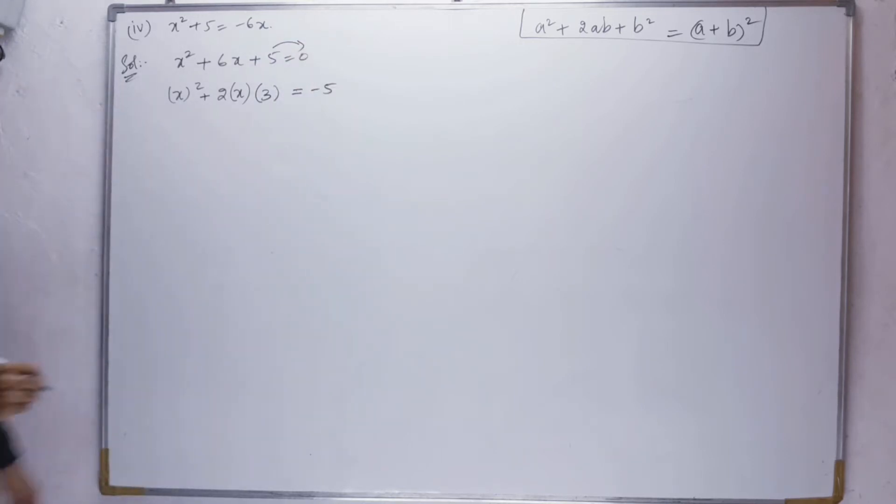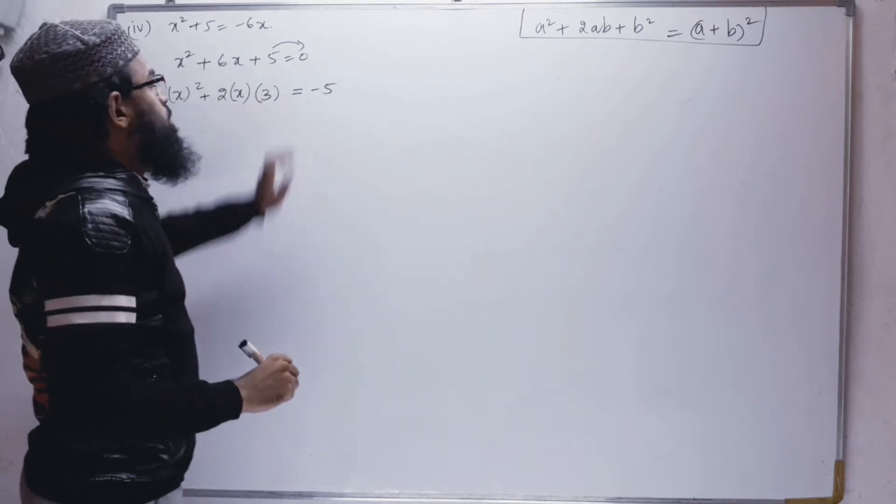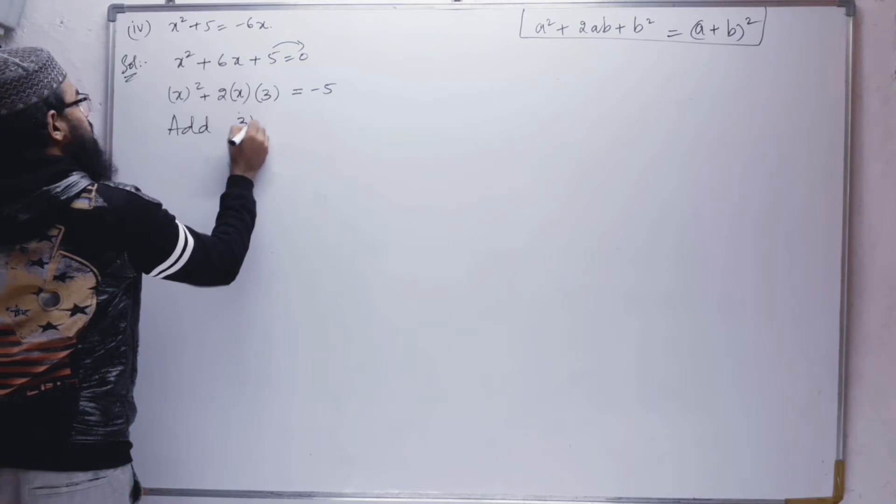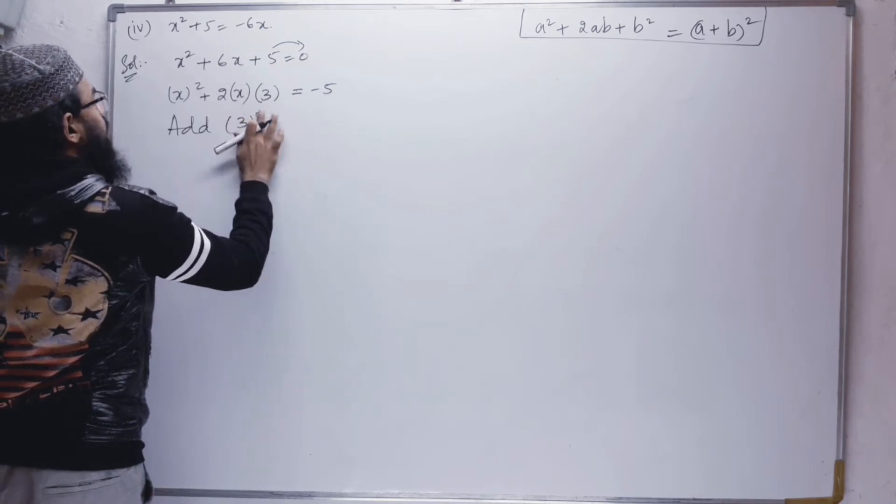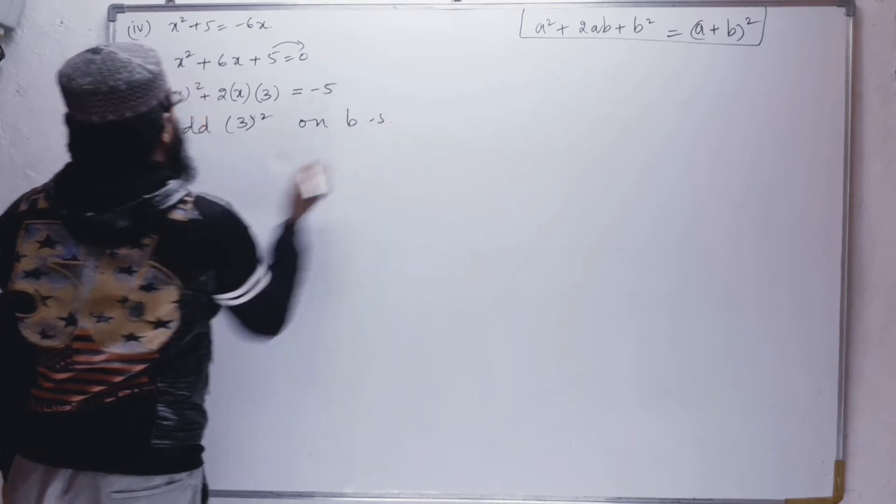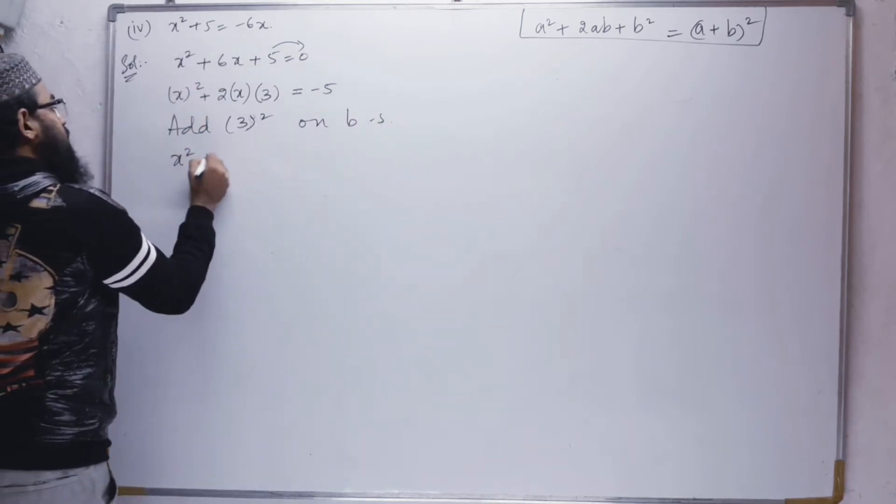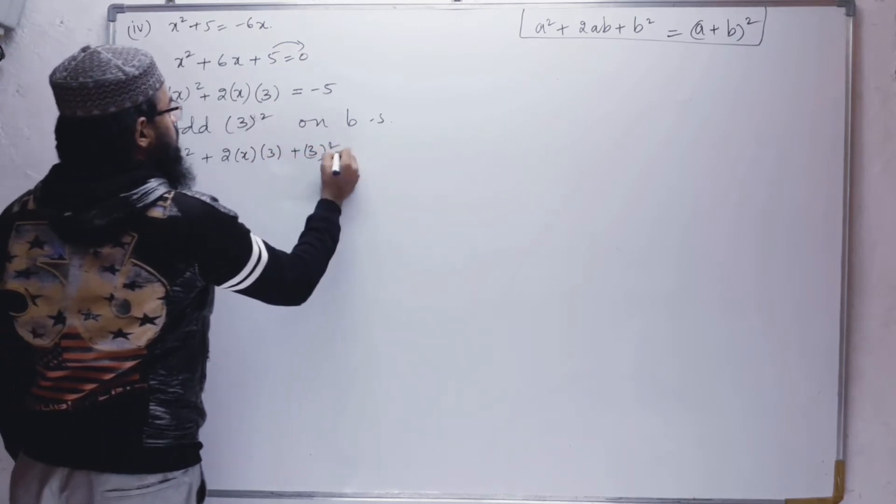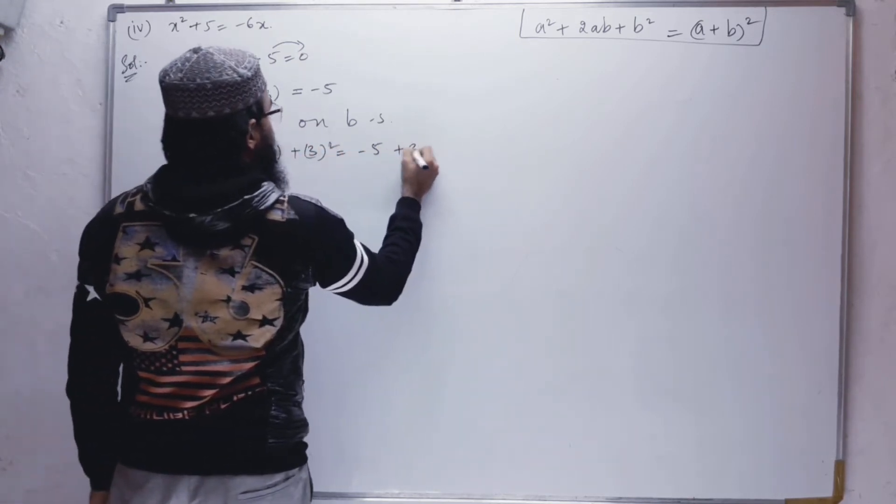Now what is the missing term? The missing term is b². So add b², which is 3², on both sides. So x² + 2x(3) + 3² = -5 + 3².